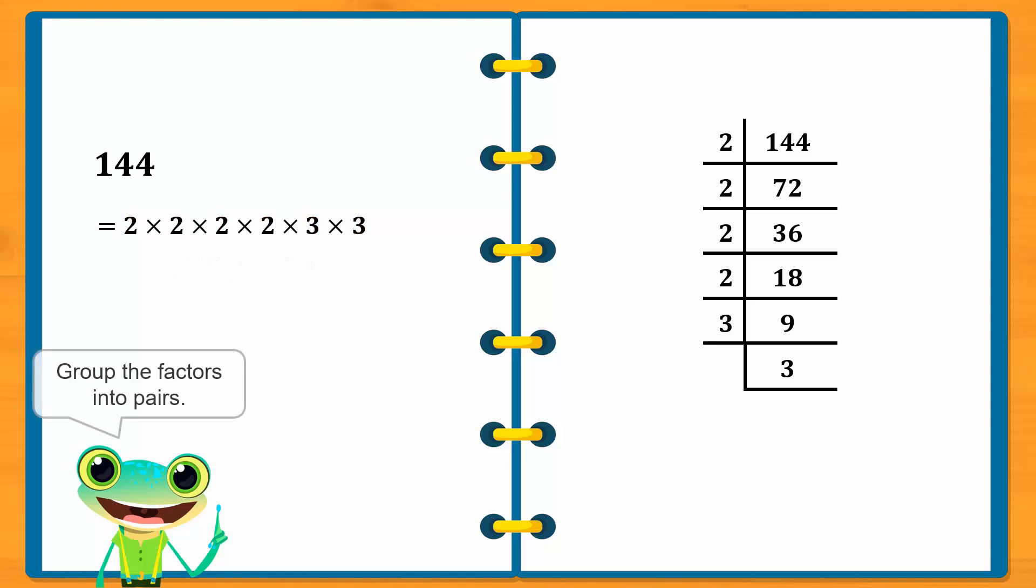Next, group similar factors into pairs. Four copies of 2 can be grouped into two pairs of 2. Both copies of 3 are simply grouped into a pair. Therefore, every factor is part of a pair. When this happens, we can conclude that the number is a perfect square.